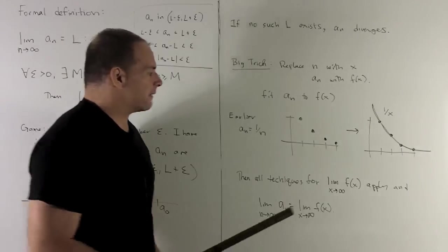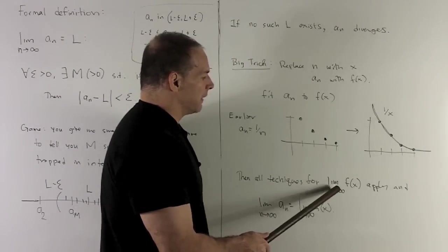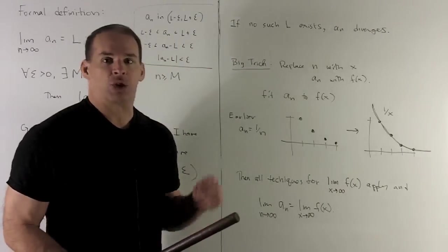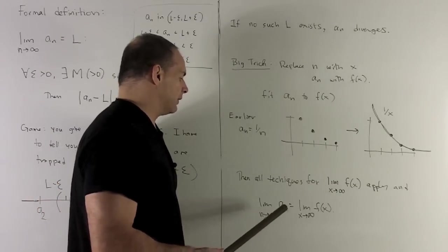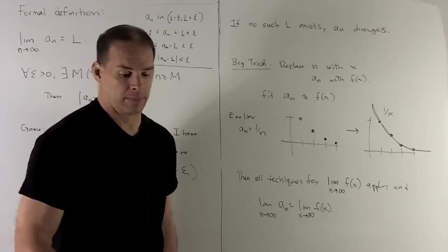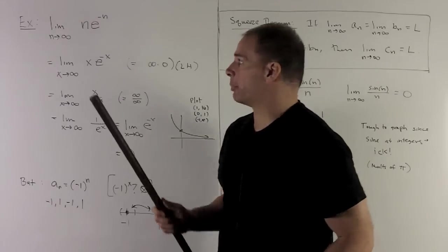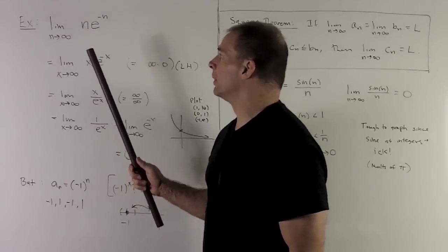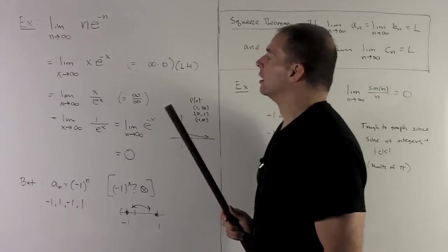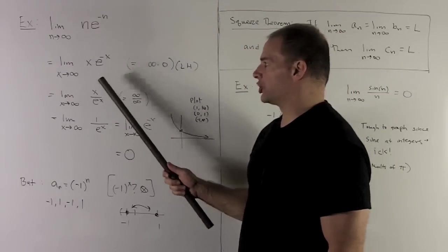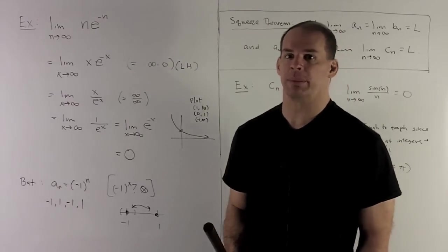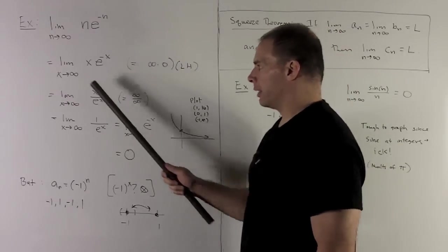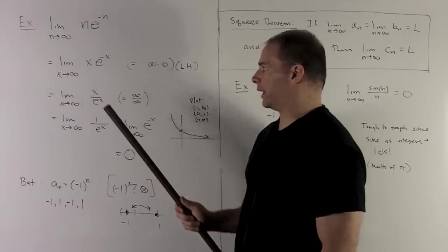So the idea is going to be if I could find the limit as x goes to infinity of f of x, then that's great. That's going to be equal to what I had for the limit as n goes to infinity of a sub n. Try the example limit n goes to infinity of n e to the minus n. So I'll fit this to the function x e to the minus x. That's a perfectly reasonable function. And then we can try to evaluate that as x goes to infinity.